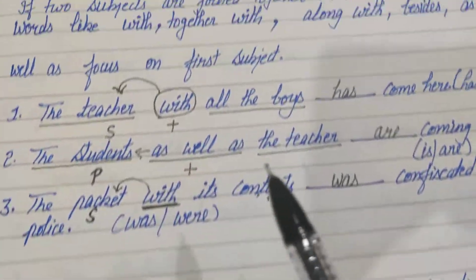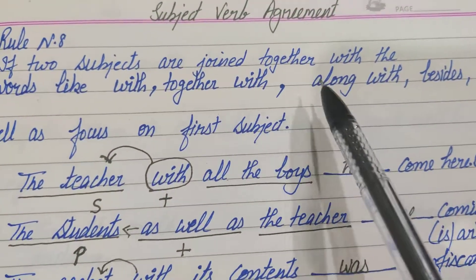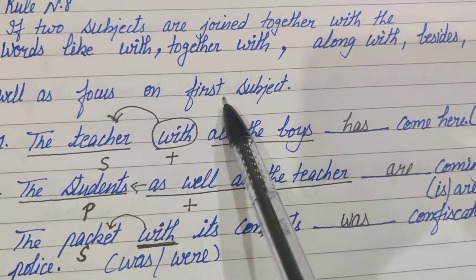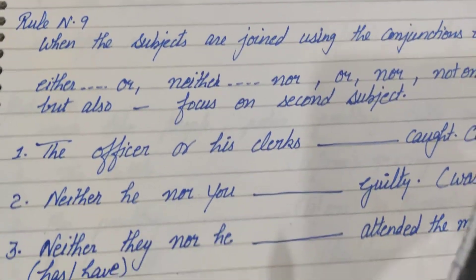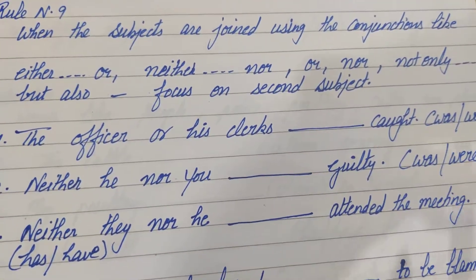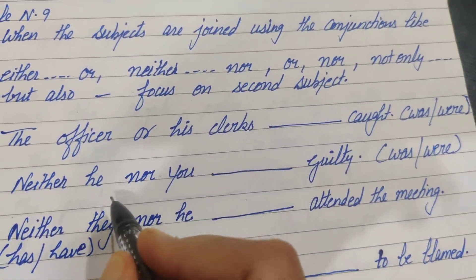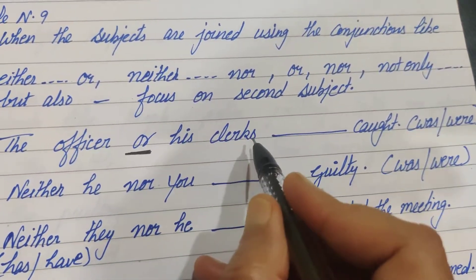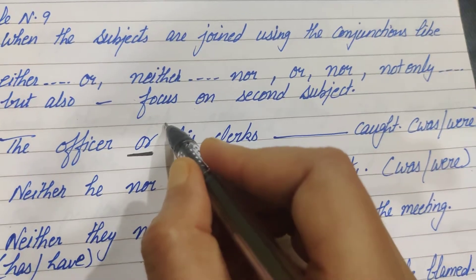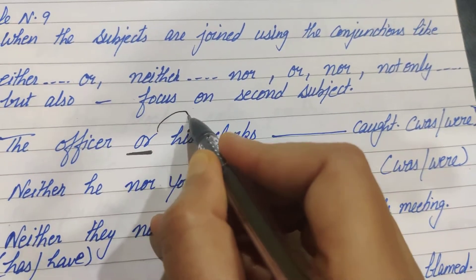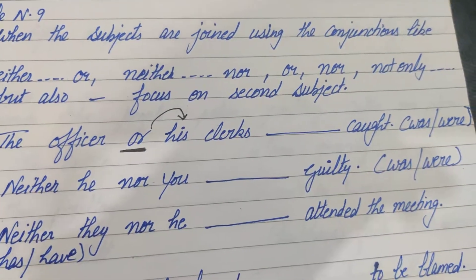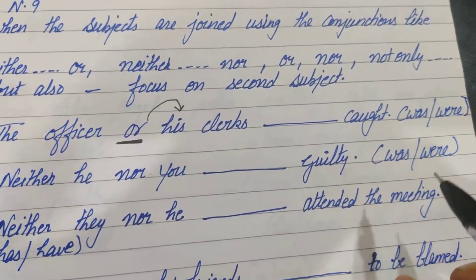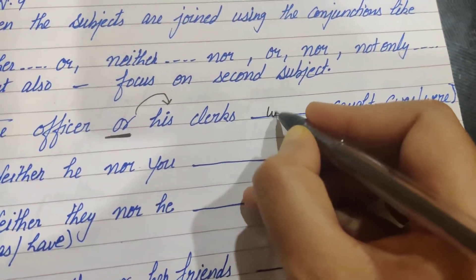For example, the joining word is 'or': 'The officer or his clerks.' We focus on the second subject. The second subject is 'clerks', which is plural. So: The officer or his clerks were caught.